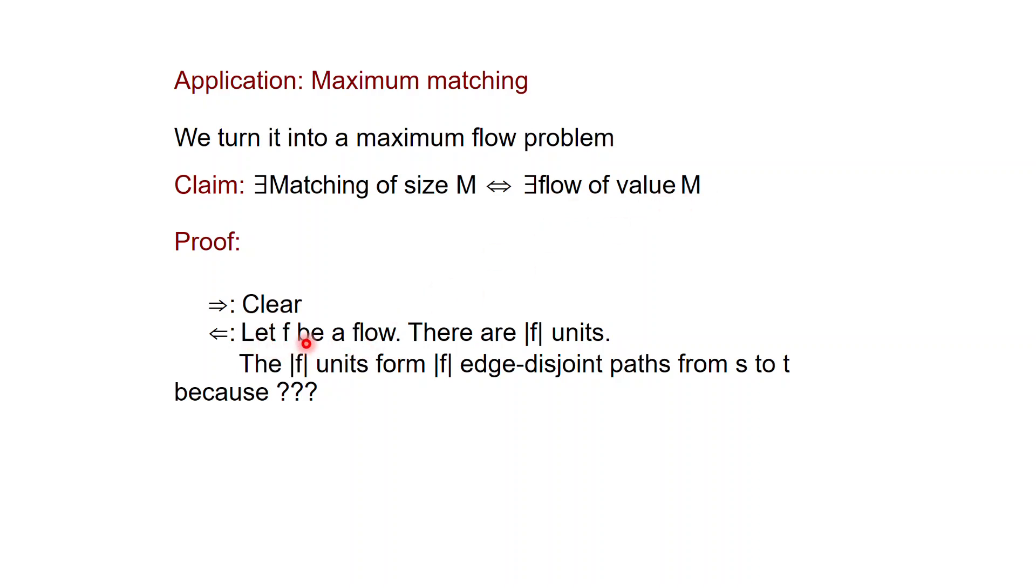If you have a flow with value M, then I claim that you can find a matching of size M. And a thing that we're going to use is that if you have a flow and if the flow is computed via an algorithm like Ford-Fulkerson or Edmonds-Karp, then every flow value will be either 0 or 1. Every flow value will be either 0 or 1. This follows just by inspection of the algorithm. If the capacities are integers, you will never introduce fractional values. So if you have a flow of value M, there's going to be M units of flow somewhere in the edges, which means that some edges are 0 and some others are 1.